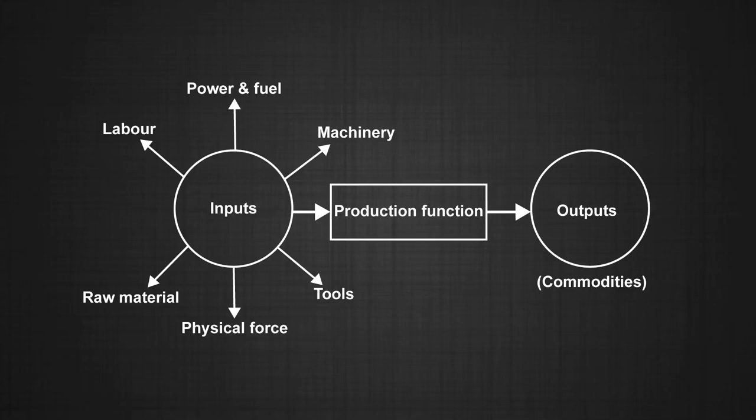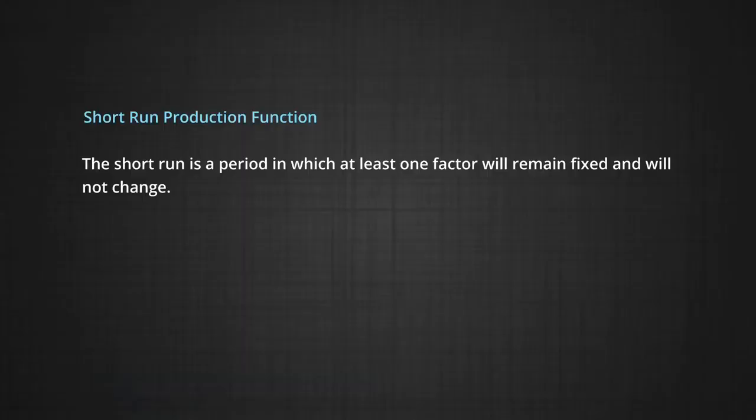Whereas changes in the total output by varying the amount of a single input may be possible even in the short run. On this basis, it is common to discuss production functions over the short run and long run. The short run is a period in which at least one factor will remain fixed and not change. Production can thus only be increased by using more of the variable inputs. So in the short run, production takes place with the help of a fixed factor and a variable factor.